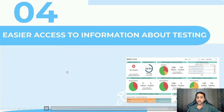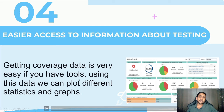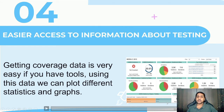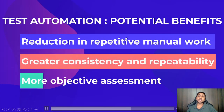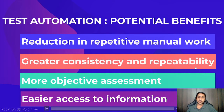The fourth benefit is easier access to information about testing. Getting coverage data is very easy with a tool. Using this data, we can plot different statistics and graphs — whatever format we want, we configure it and get the data in that form. For example, how many lines of code are not compliant with the MISRA guideline for coding standards. These are the four benefits of test automation as per ISTQB: reduction in repetitive manual work, greater consistency and repeatability, more objective assessment, and easier access to information.